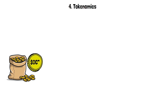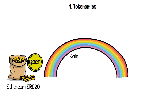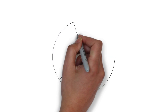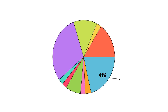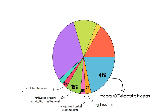For tokenomics, the native token of Octopus Network has the ticker OCT. It was first released on Ethereum as an ERC-20 token; later, part of the tokens were bridged to NEAR under the NEP-141 standard via Rainbow Bridge. OCT tokens have a fixed total supply of 100 million non-inflationary tokens. Of these, 41% are allocated to investors: 6% for early investors, 5% for strategic round investors, 15% for institutional investors in the seed round, 5% for institutional investors in Series A, and 5% for IEO participants.